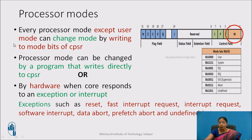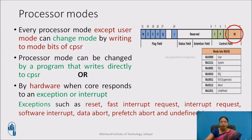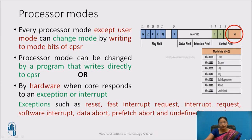Every processor mode except user mode can change the mode bits. The mode can be changed by writing the mode bits to CPSR. Processor mode can be changed by a program that writes directly to CPSR, or by hardware when the core responds to an exception or interrupt.